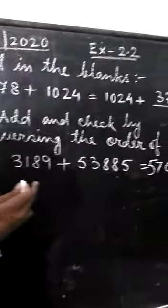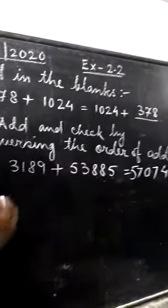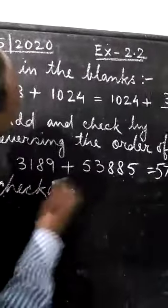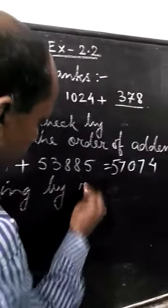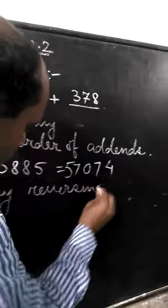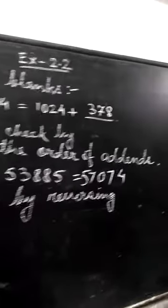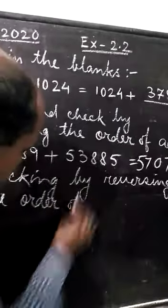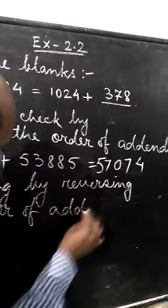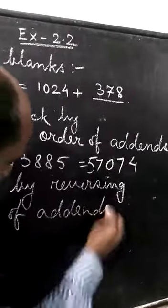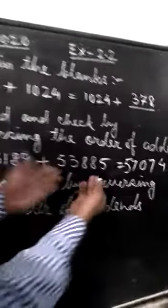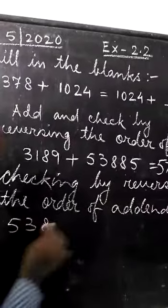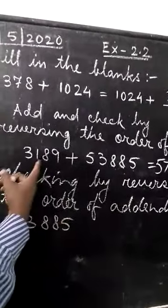Now, we have to check by reversing the order of addends. Now, in this case, first you write this one: 5, 3, 8, 8, 5 and then you write 3, 1, 8, 9.